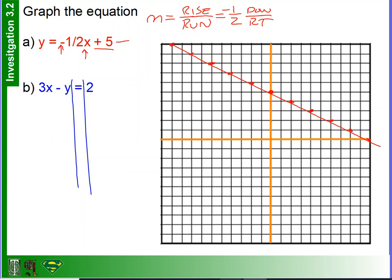So I can't help but notice this y is negative, so I'm going to add y to both sides. So I get 3x is equal to 2 plus y. Now I can subtract 2 from both sides. Now I get 3x minus 2 is equal to y. Alright, so what's my y-intercept? Well, my y-intercept is negative 2.